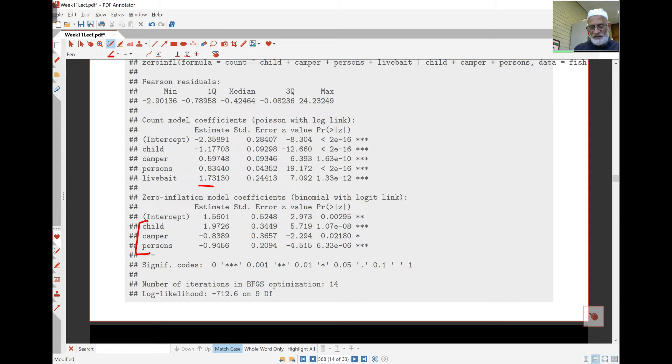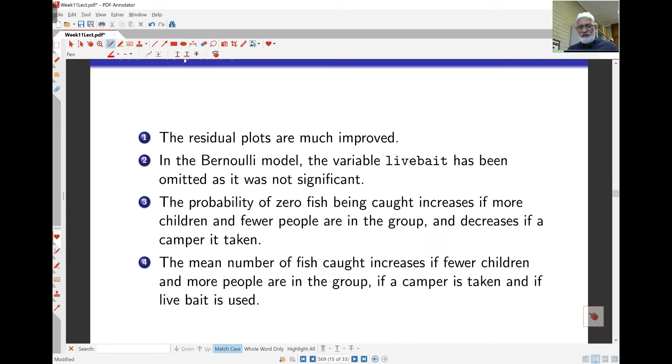If you take a camper, probability of catching zero fish has decreased. Probability of getting more fish has increased. If you have more children, then you're more likely not to catch any fish. So a lot of things are consistent. Those things that increase the odds of probability of getting zero fish act in the opposite way for getting more fish or the average fish increases in the Poisson model. So a lot of things are consistent and I've written them down in the next slide over here.